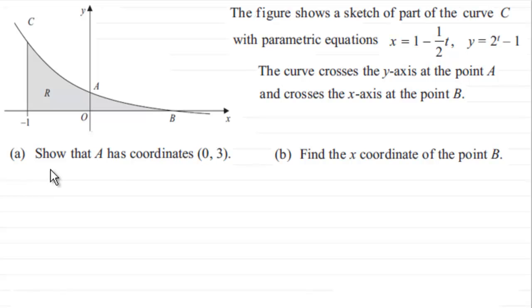And what we've got to do is show that A has coordinates 0,3 and we've also got to find the x-coordinate at the point B.